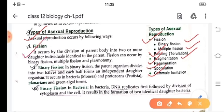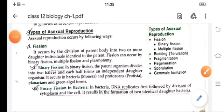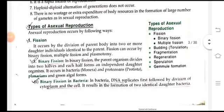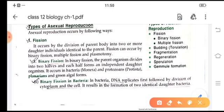Fission, it occurs by the division of parent body into two or more daughter individuals which are identical to their parents. Fission is of two types: binary fission and multiple fission. In binary fission, the parent organism divides into two halves and they form an independent daughter organism. Whereas, in multiple fission, number of daughter cells are produced from parent organism.